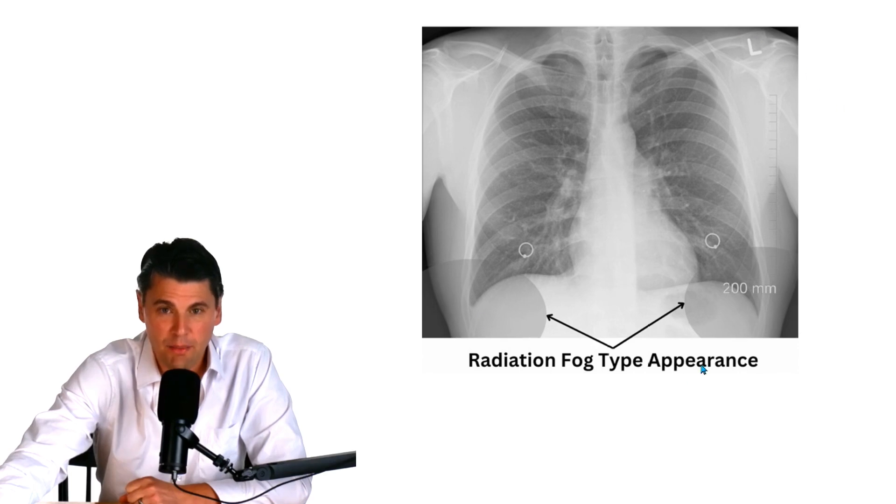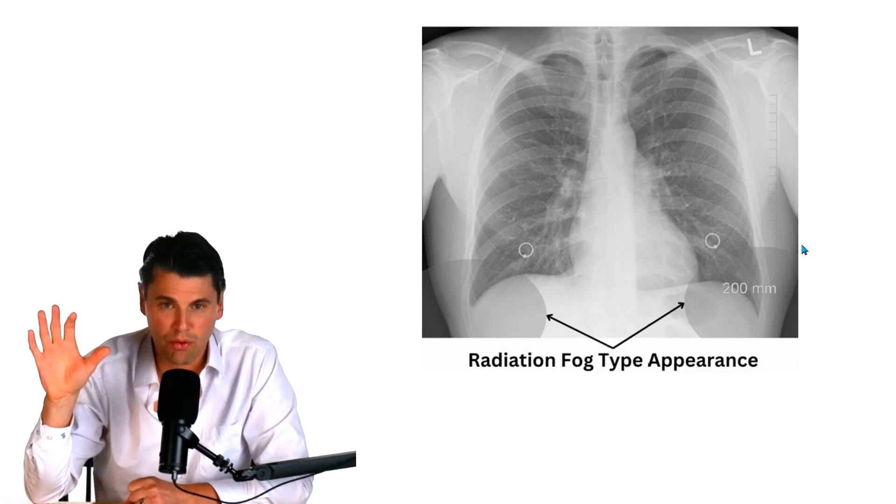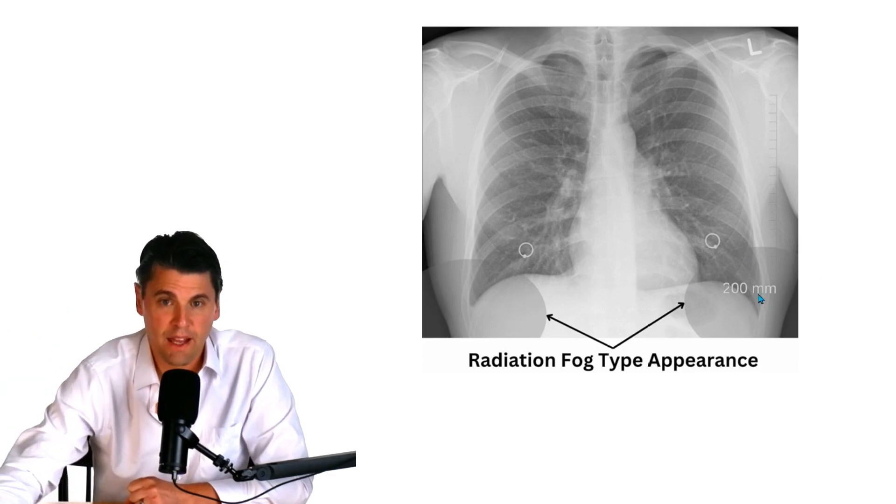If you have an x-ray image and then you have some regions in that image which are brighter than they should be, that could occur due to radiation fog.